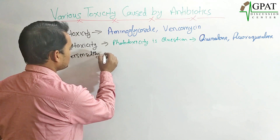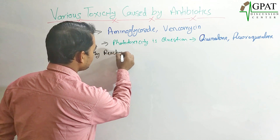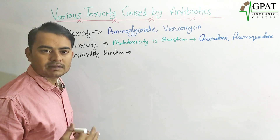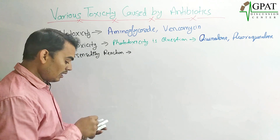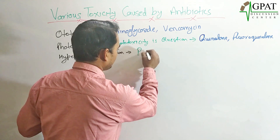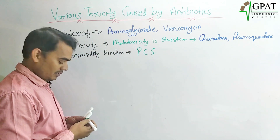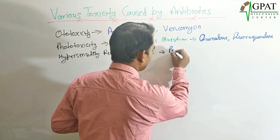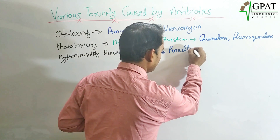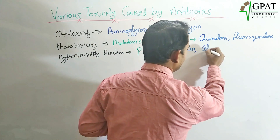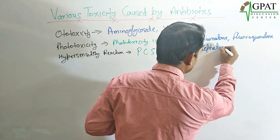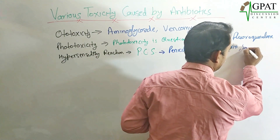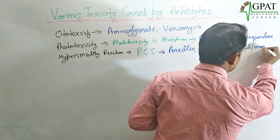The next toxicity is hypersensitivity reactions. To remember hypersensitivity reactions, the trick is PCS — P for penicillin, C for cephalosporin, and S for sulfonamide.